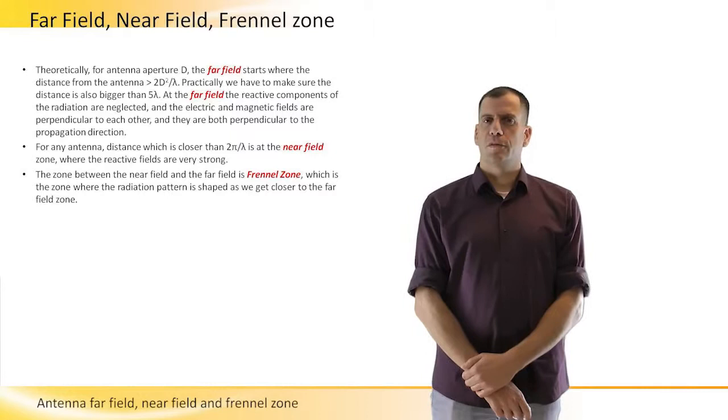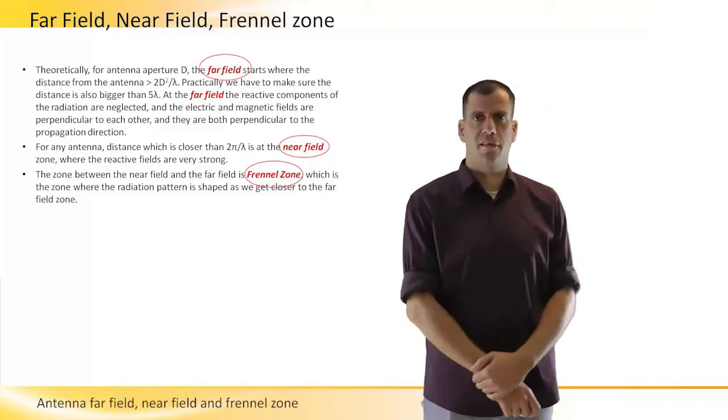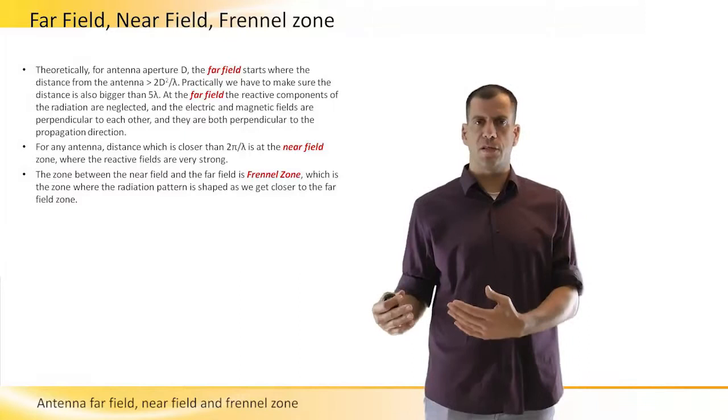Now I want to discuss terms that are widely spread in the antenna area. This is the far field, the near field, and the Fresnel field. These are not actually fields because fields are only electric or magnetic fields. These are actually zones - the ranges from the antenna in which the electric and magnetic fields behave in a certain way.